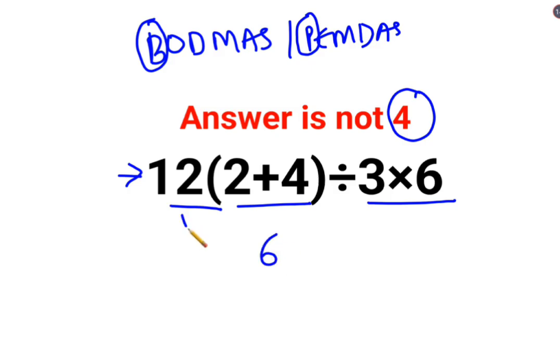And now since there is nothing between this 12 and the bracket, the sign between the entire bracket and 12 is just multiplication divided by 3 multiplied by 6. Now a lot of people think that this is becoming division so this and this can get cancelled and therefore 12 divided by 3 is basically 4. That, my dear friends, is incorrect.